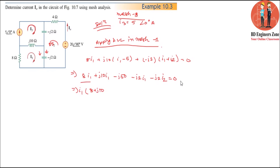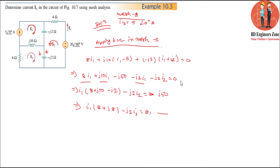Simplifying Mesh 1 equation: 8·i1 plus j10·i1 minus j2·i2 equals 0. Then j10 plus j10 minus j2·i2 equals 0, giving j8 minus j2·i2 equals negative j50, so adding j50 to both sides.